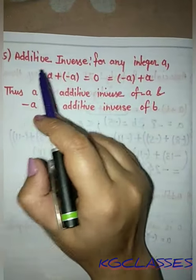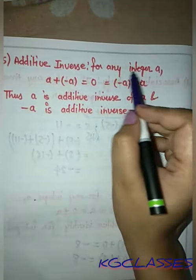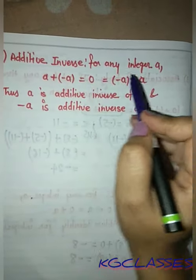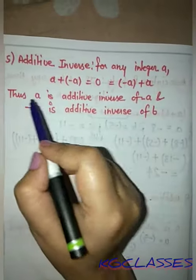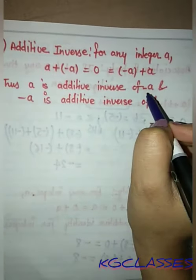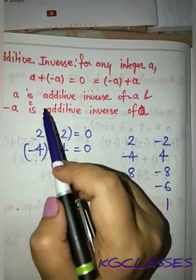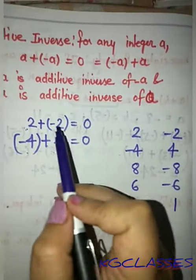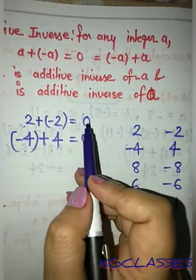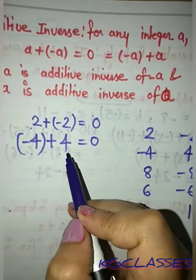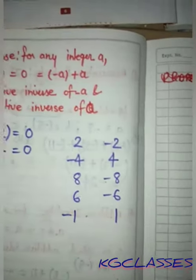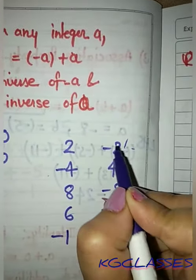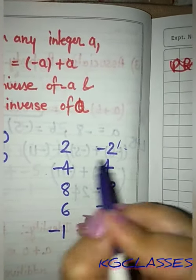The next and last property is additive inverse. For any integer a, a plus minus a is equal to 0, and minus a plus a is also equal to 0. Thus minus a is the additive inverse of a. For example, the additive inverse of 2 is minus 2, and the additive inverse of 4 is minus 4.